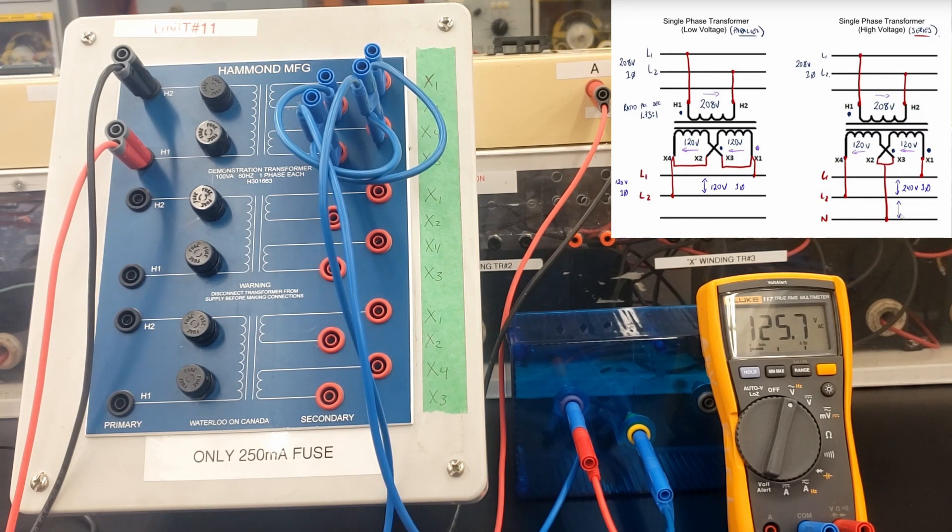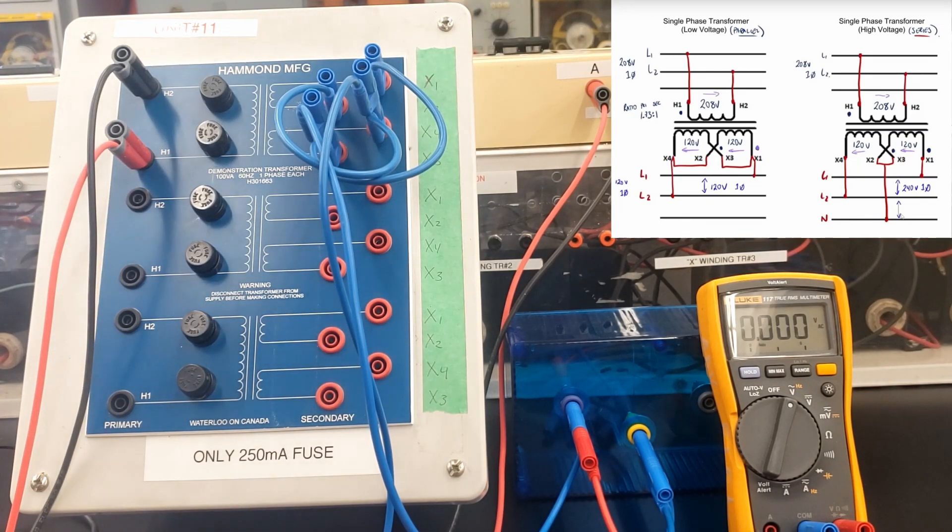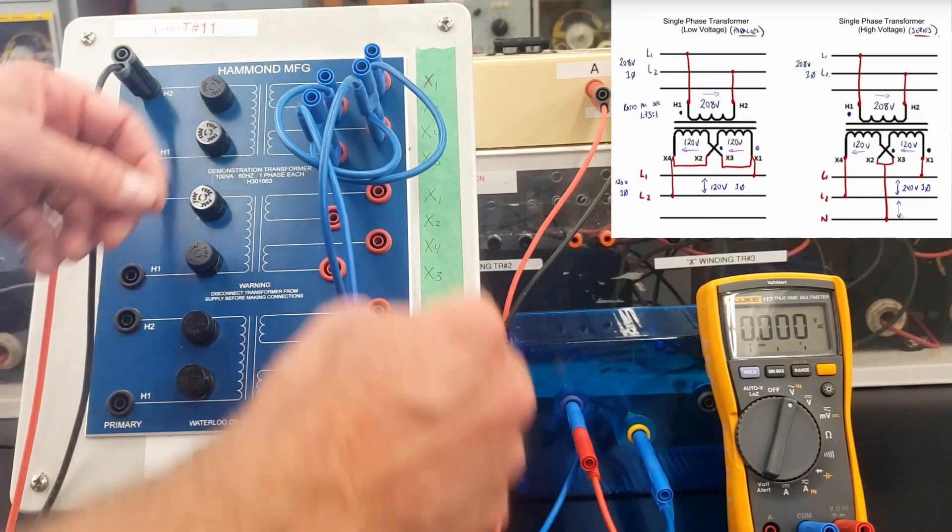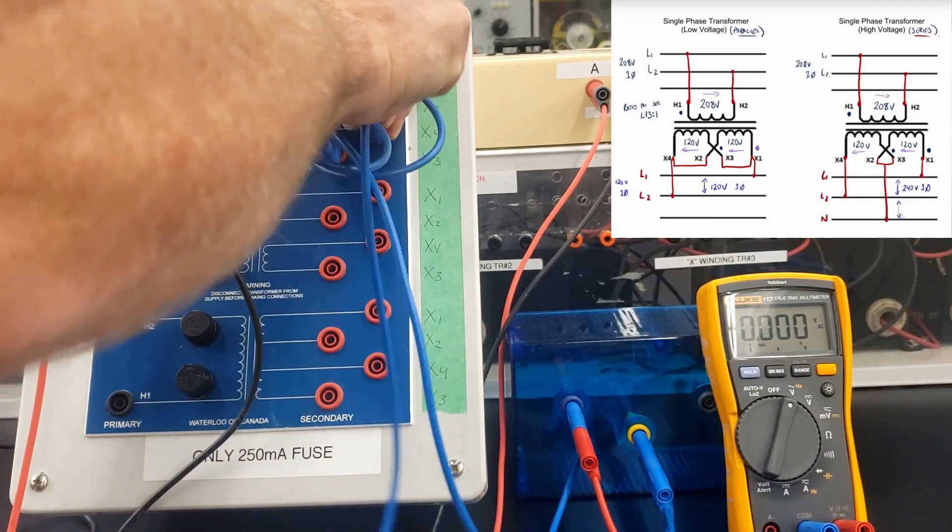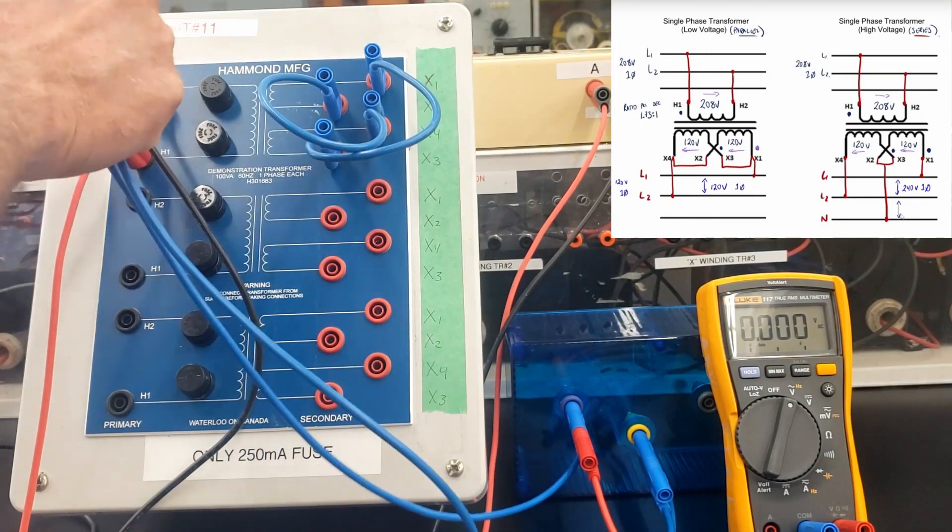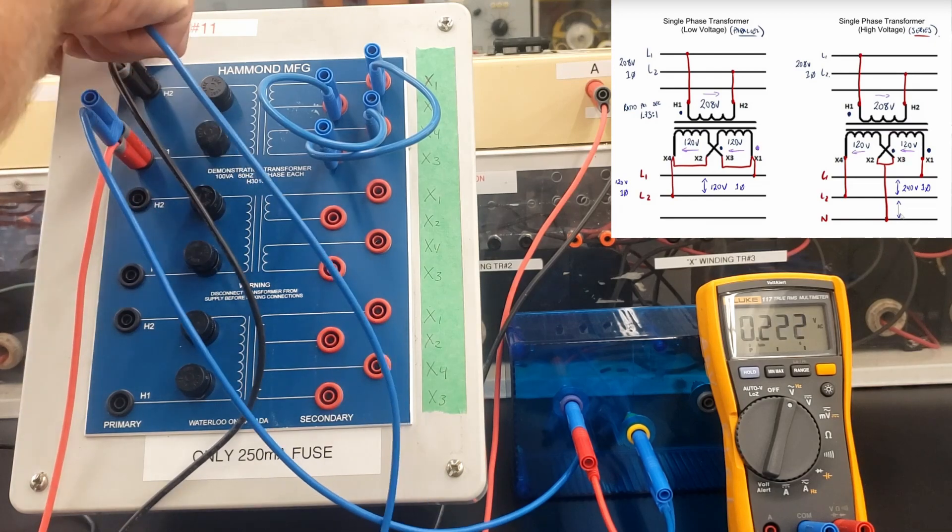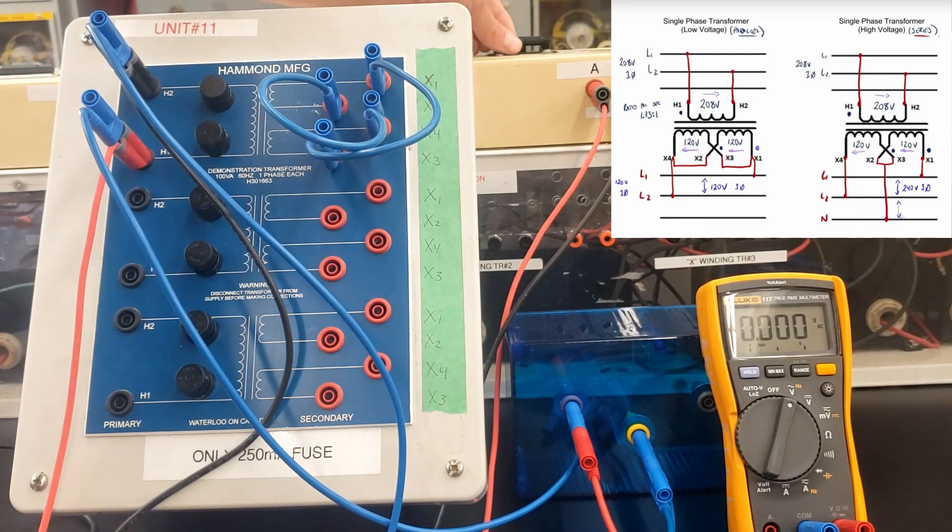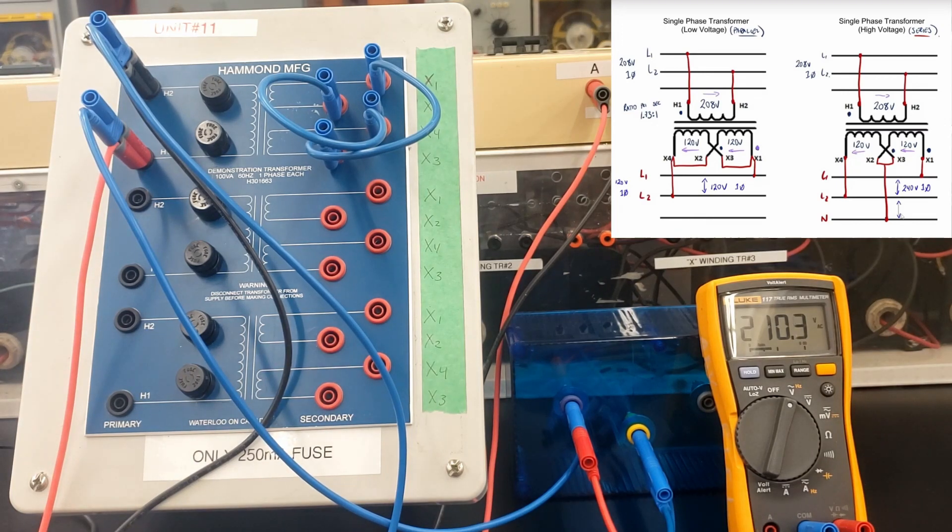On these transformers, there are two secondary windings. And they have identical voltages of 120. In this case, 125, 126 volts. Remember that these voltages are higher at the moment because we don't have a physical load that is connected to the secondary of the transformer. If we hooked up a load to the secondary here, then we would see the voltage drop to 120 volts. Primary voltage was 2.8.